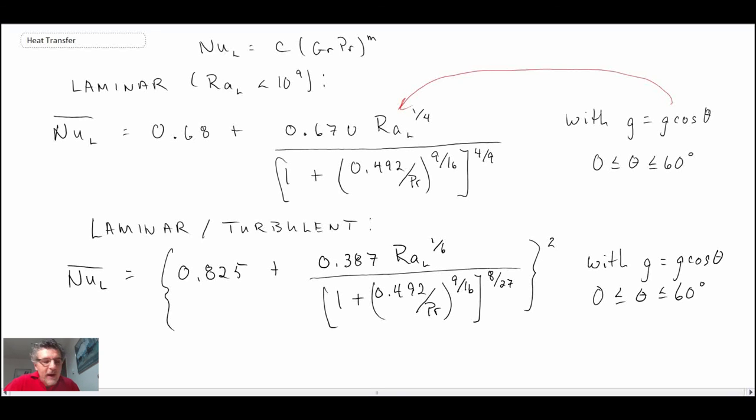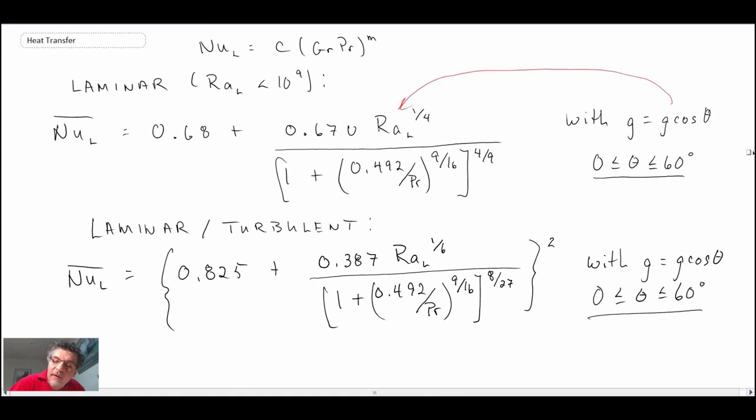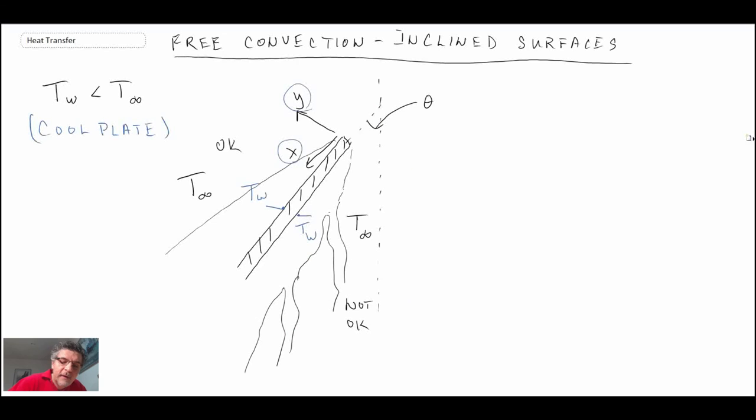That is how you handle an inclined surface over this angle range. If you want to determine what is happening in terms of the convective heat transfer coefficient on the surfaces that we were not able to do—on the hot plate on the upper surface and on the cool plate on the lower surface—you're going to have to go into the literature and look in journal articles to see if people have done experiments investigating those types of flow fields.